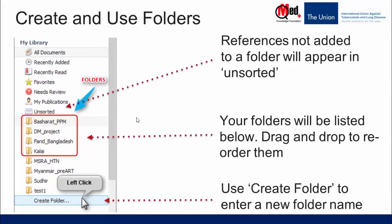Folders are one of the most useful features in Mendeley. They allow you to quickly organize your references under different topic headings. For example, you can create a folder for each research project or research paper you're working on. To create a folder, click on the option called Create Folder and give it a name. Once you do that, you can drag and drop references from the middle panel into these folders. You can also create subfolders within existing folders to organize further.